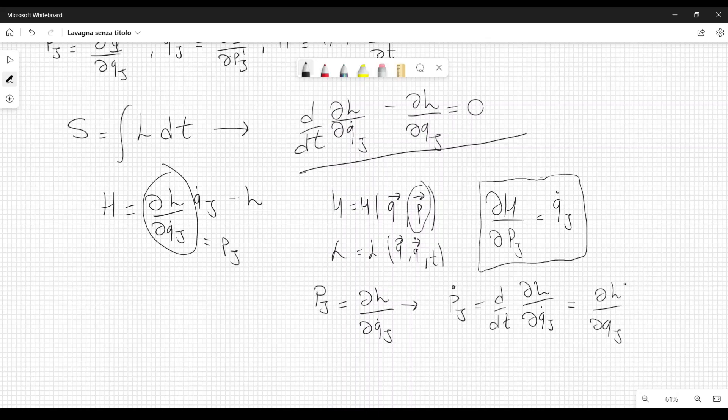dL over dq j. But dL over dq j from here can be written as minus the derivative of the Hamiltonian with respect to q j. So we have found another equation involving the Hamiltonian, and this is also one of Hamilton's equations.